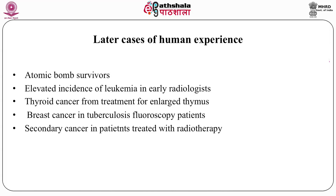What are the later human experiences? Most notable — and which has become a big repository of knowledge for radiation risk — is the atomic bomb survivors of Hiroshima and Nagasaki. That is the largest human experience on what radiation can do. Second, elevated incidence of leukemia in early radiologists, who were not taking proper precautions to protect themselves. Since they were not aware of the risks, they did not take precautions, and there was elevation of leukemia risk in those radiologists.